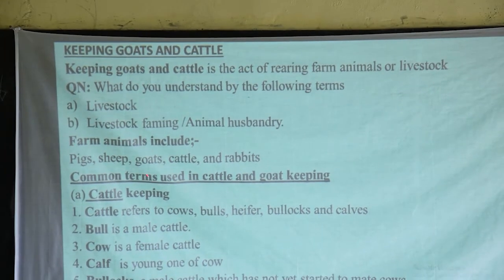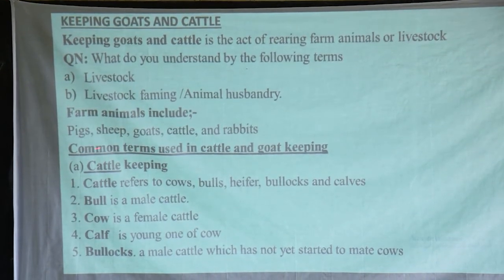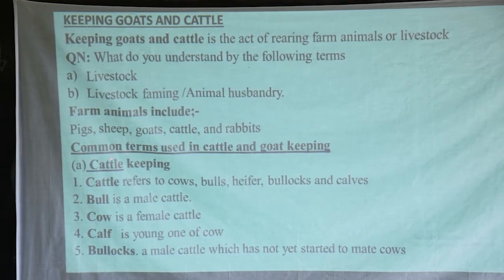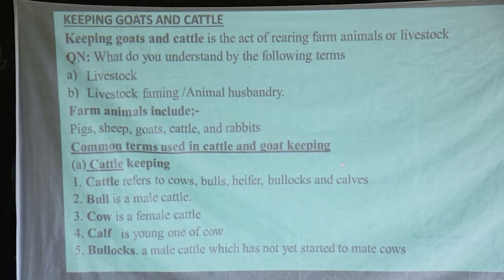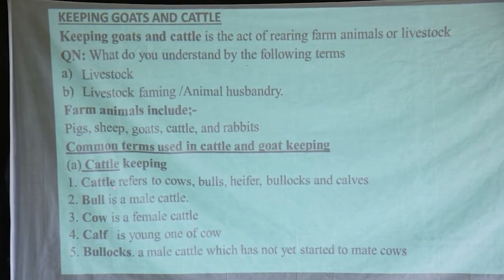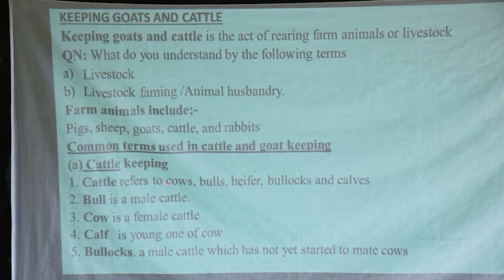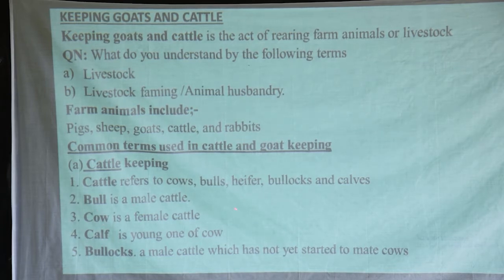Let us look at the common terms used in cattle and goat keeping. First, terms used in cattle keeping. Cattle refers to cows, bulls, heifers, bullocks, and calves — a collection of these gives us the one name: cattle. That's a group. A bull is a male cattle. A cow is a female cattle. Simple like that.